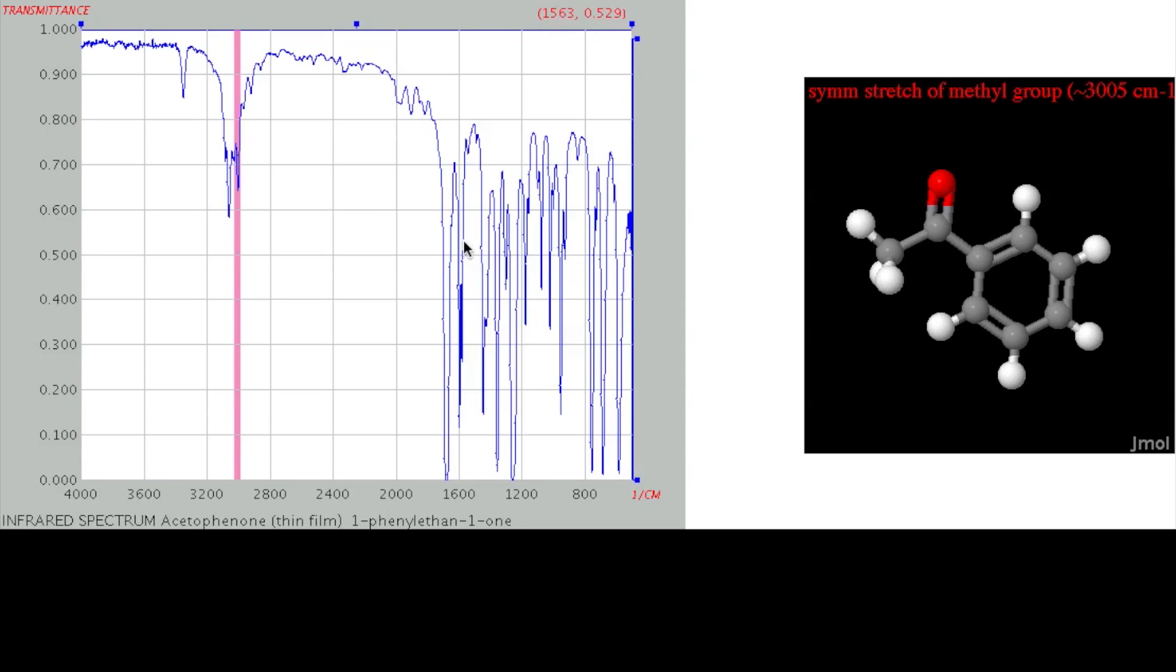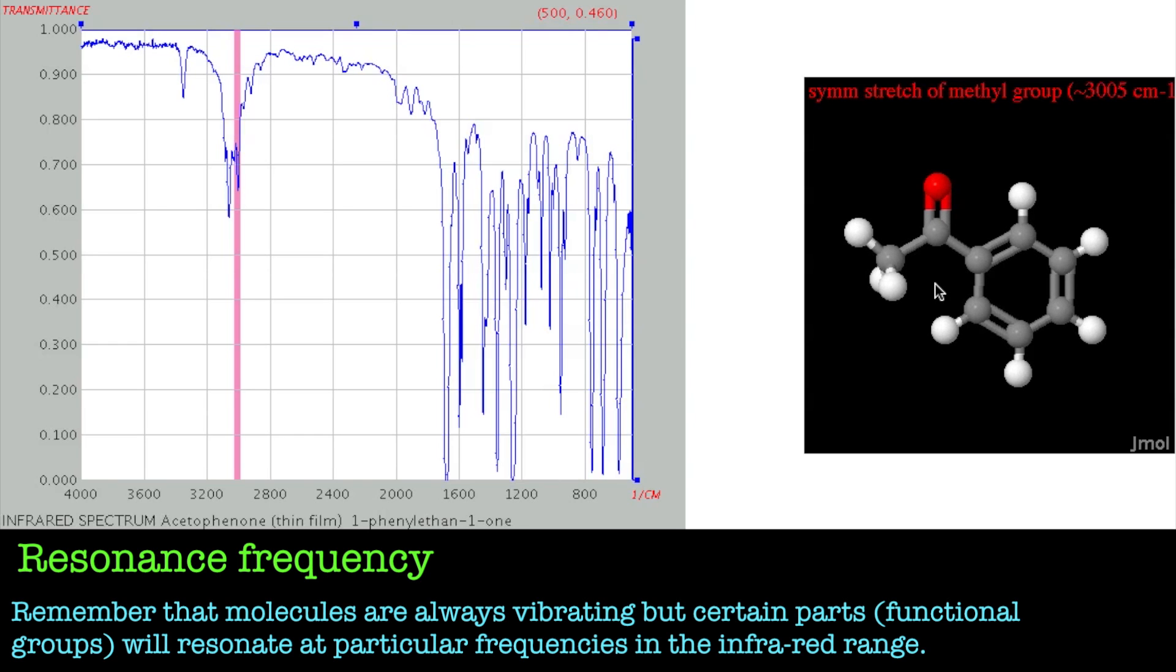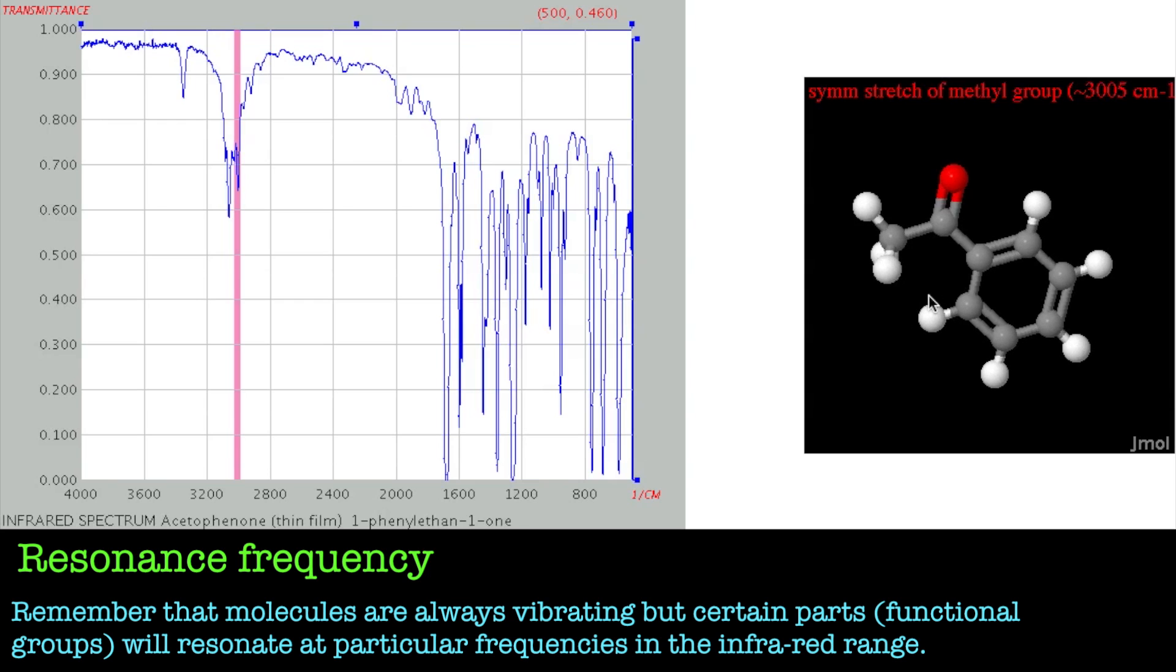So if you imagine shining infrared light through your molecule, then only this part of the molecule, in this particular case the methyl groups, will pick up enough energy to vibrate. They'll resonate at that frequency.